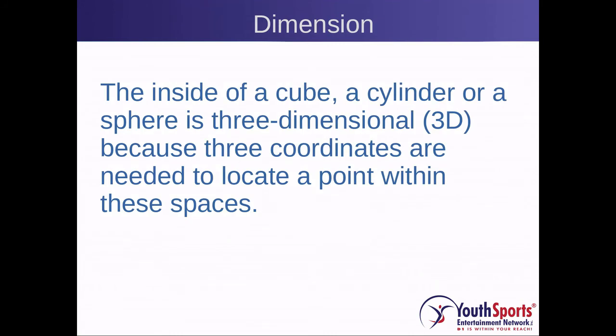When we take a shape like a cube, a cylinder, or a sphere, it is called a three-dimensional object because we need three coordinates to specify a point within it.